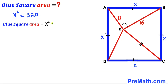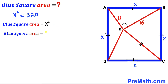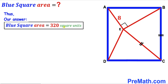Since the blue square area equals x squared and x squared is 320, the area of blue square ABCD is 320 square units. That's our final answer. Thanks for watching and please subscribe for more exciting videos.